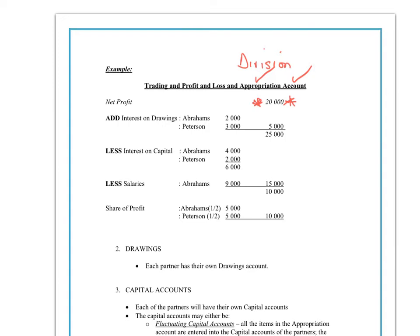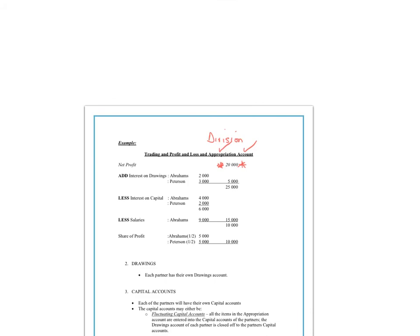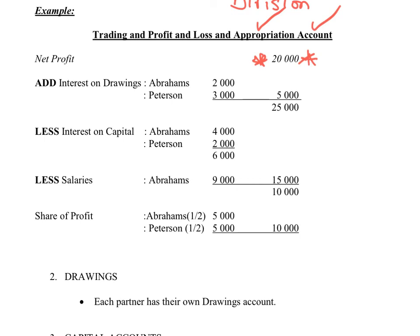So how is this net profit of $20,000 going to be divided between the partners? That would be written in your partnership agreement. Here we can see we've got Abrahams and Peterson. Both Abrahams and Peterson have drawn money out of the business, and there would be a penalty and interest for doing that. So Abrahams has to pay back $2,000 in interest and Peterson has to pay $3,000. Because they're paying that as a penalty, it gets added to the net profit of $20,000. So when you add that $5,000 total, this business is now going to appropriate or divide $25,000.